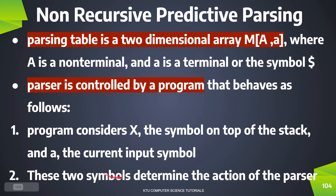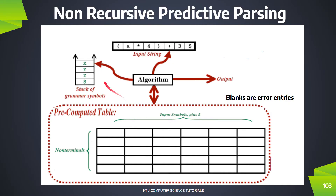There are two symbols. We have the parsing system and we can set the parsing system with the component added to the stack. When each component is the top branch of the stack, we will call it via the input buffer.